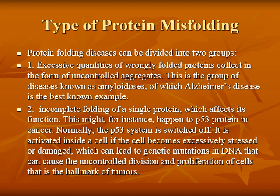The second type is incomplete folding of a single protein which affects its function. This might happen in the P53 protein in cancer. Normally, the P53 system is switched off inside a cell. If the cell becomes excessively stressed or damaged, this can lead to genetic mutation in DNA, causing uncontrolled division and proliferation of cells — the hallmark of a tumor.